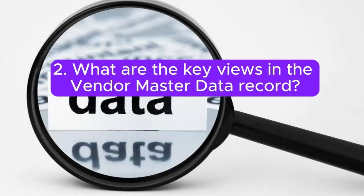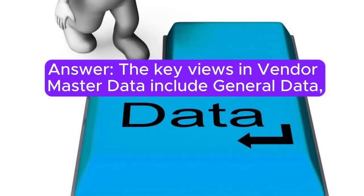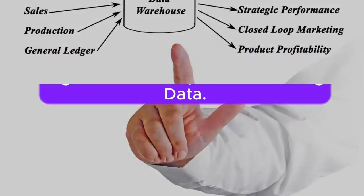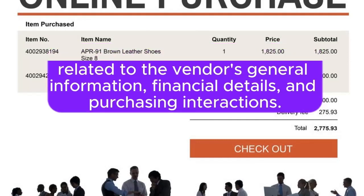2. What are the key views in the Vendor Master Data Record? Answer: The key views in Vendor Master Data include general data, company code data, purchasing organization data, and accounting data. These views store information related to the vendor's general information, financial details, and purchasing interactions.